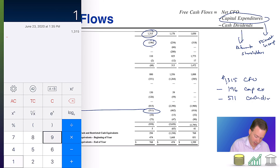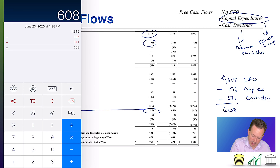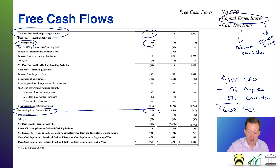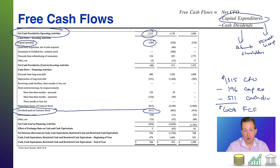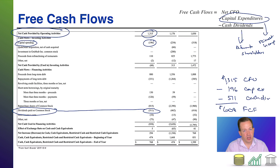$1,315 minus $196 minus $511 gives us a grand total of $608 — that is our free cash flows (FCF). In other words, that's the amount of free cash the company has to play with after reinvesting in the business and giving something back to shareholders. Is that good or bad? There's no general rule of thumb — you want some cash to play around with, but not too much. It just tells you whether the company has room to play or not.